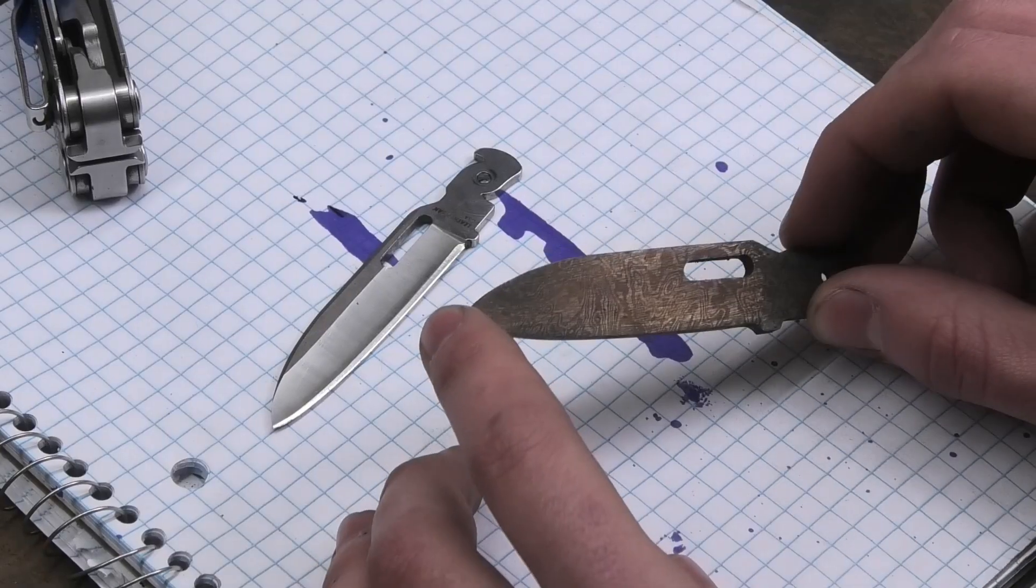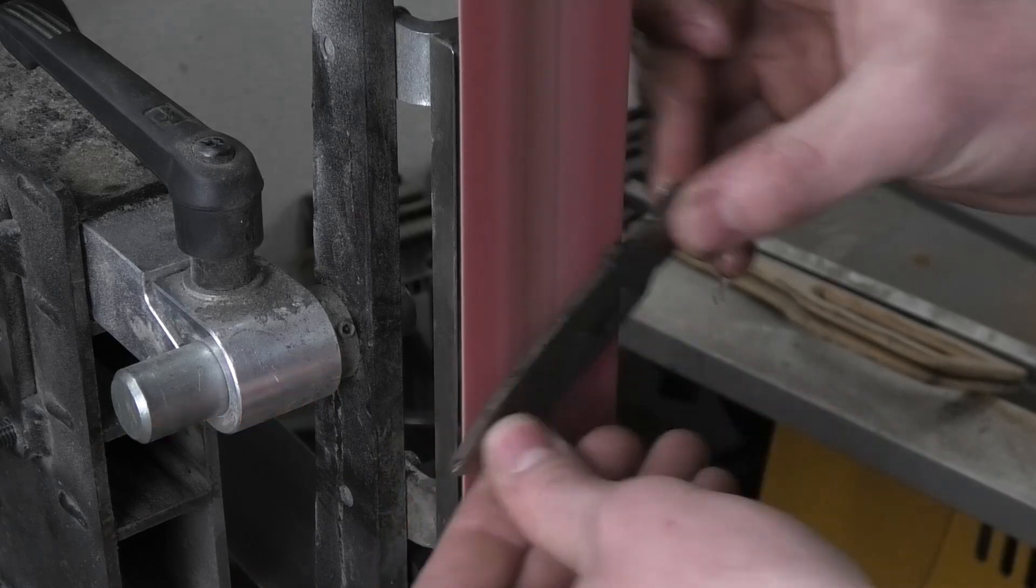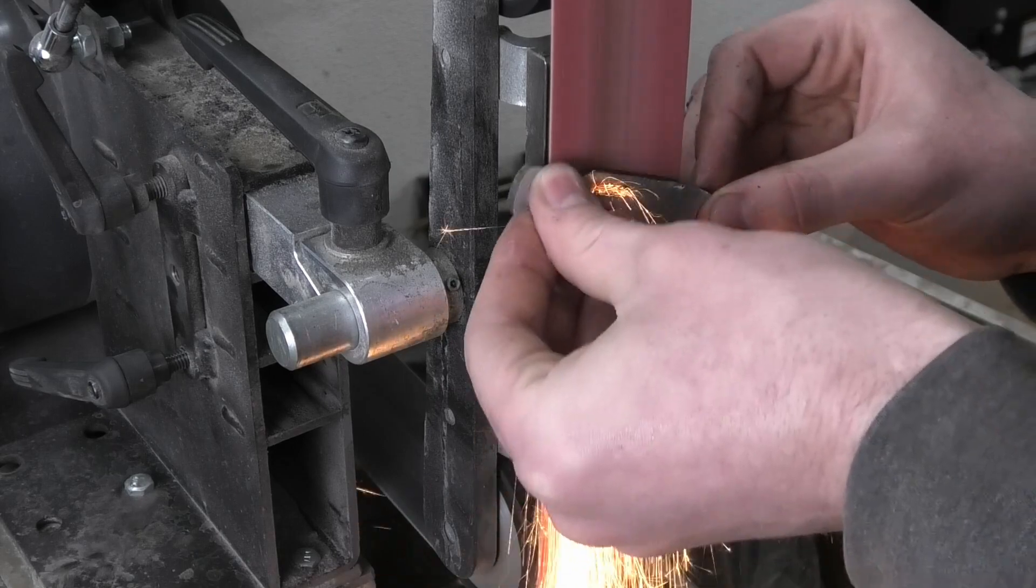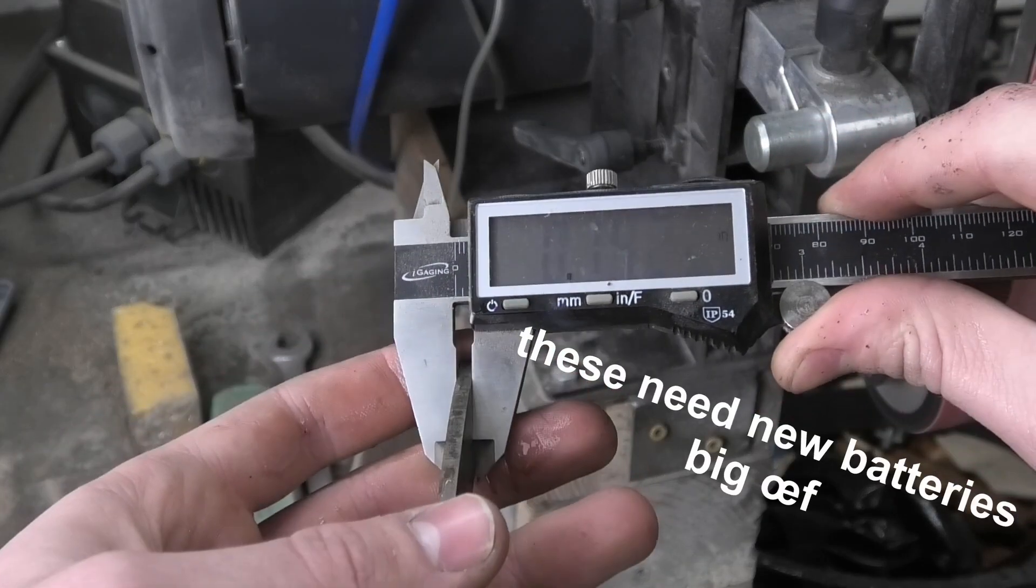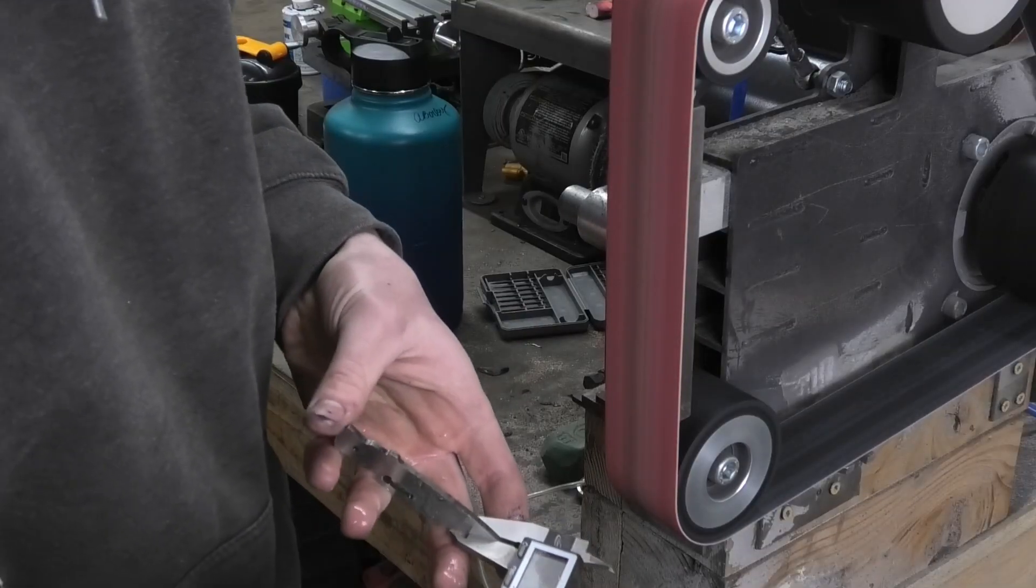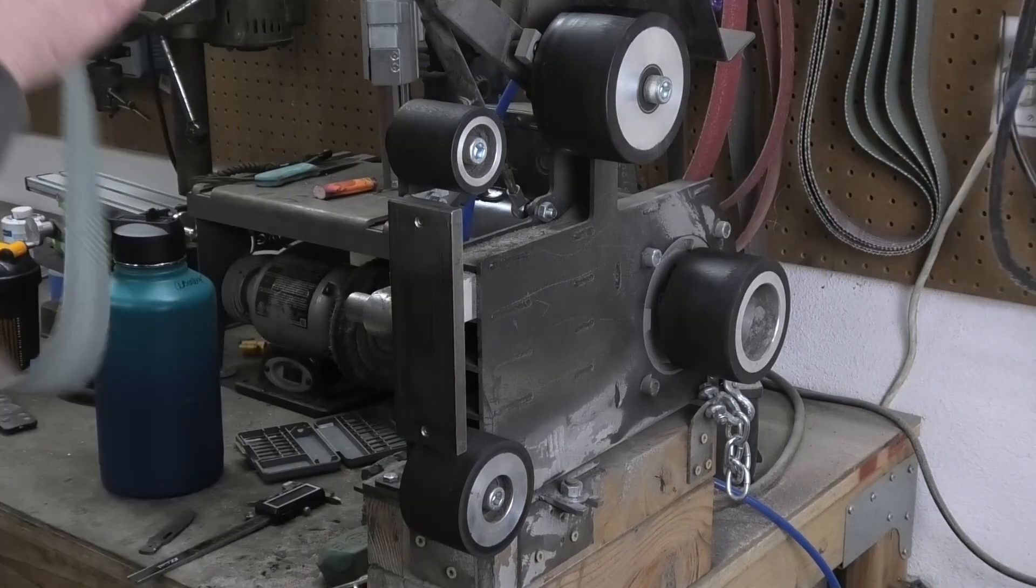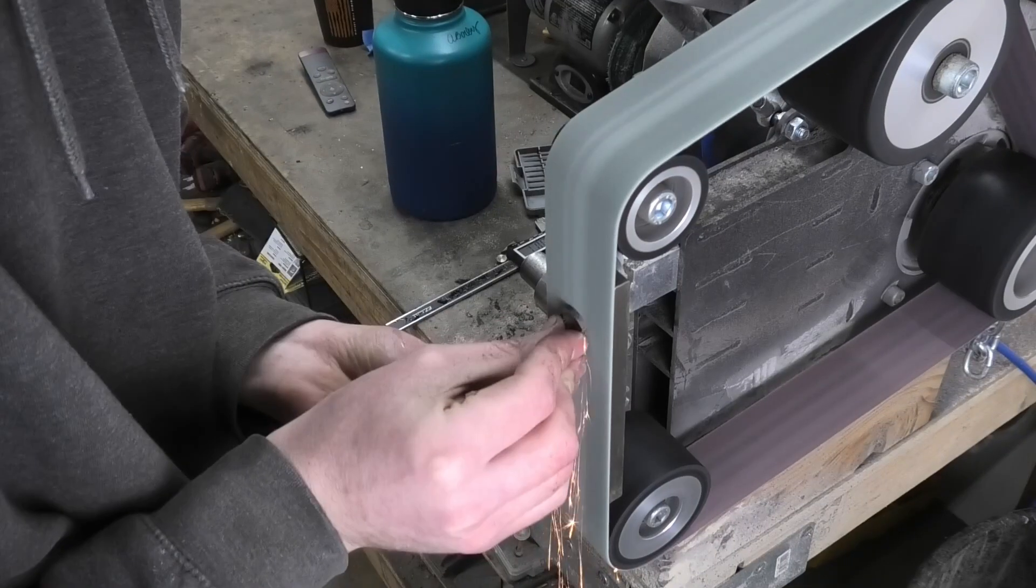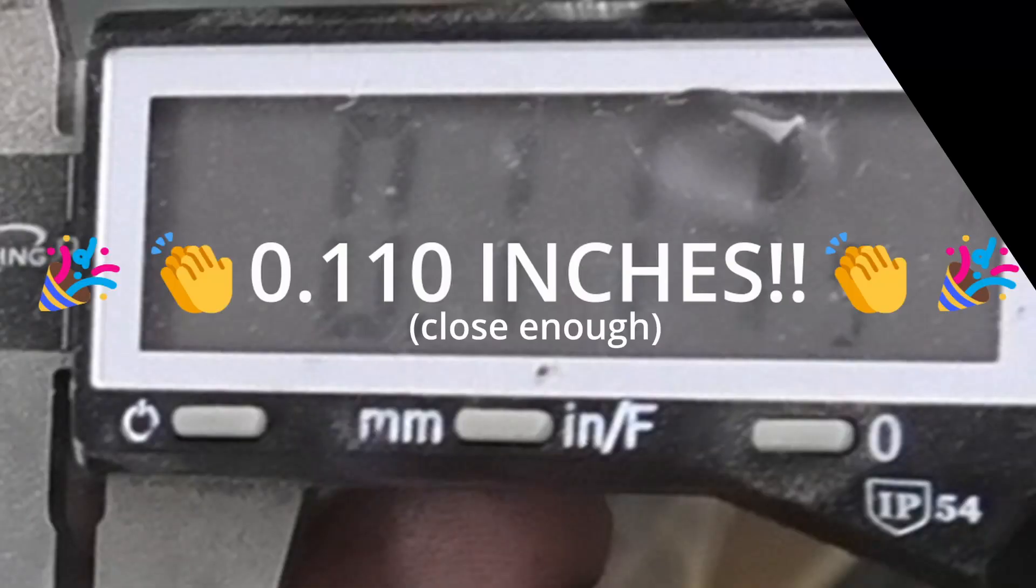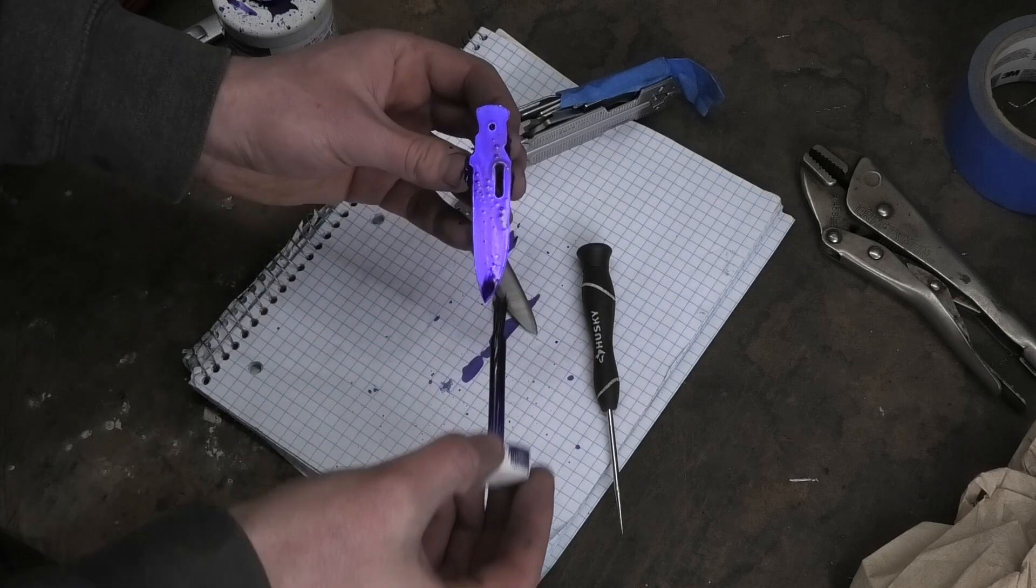Now that I have this blade hardened and tempered, I can give you a quick rundown on what I'm going to be doing next. I'm going to be flattening off these faces, I'll start with 120 grit on the belt grinder, bring this down to its final thickness which is around 0.11 inches, and then I'll bring it up to 220 grit.